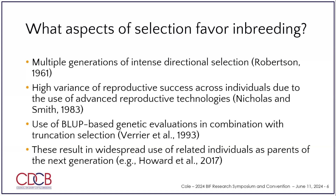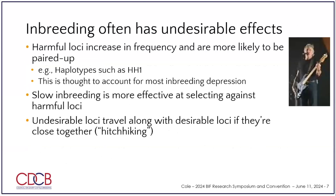We also use Best Linear Unbiased Prediction — that's a fancy way of talking about the animal model genetic evaluations we use today. The animal model evaluations push you heavily into family-based selection, favoring families over individuals. That further compounds this problem. And artificial insemination companies will make dozens or sometimes hundreds of sons of high-ranking bulls, who become the parents of the next generation, ramping up the selection pressure.